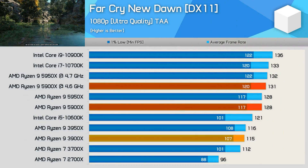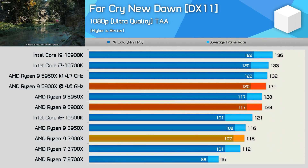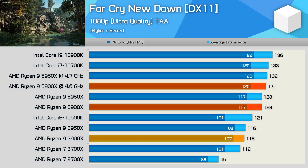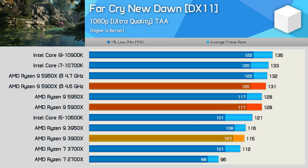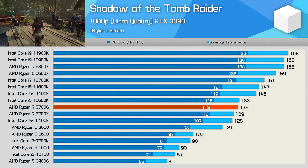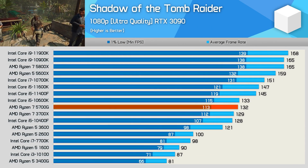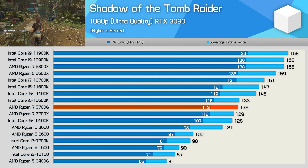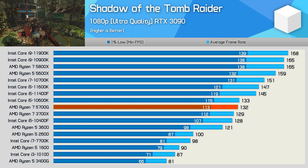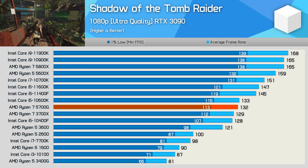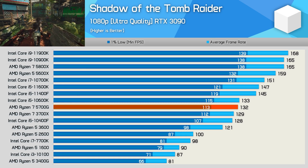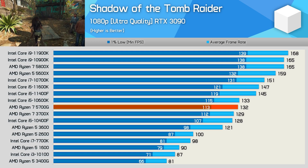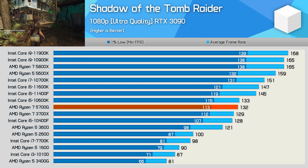If you look at our day-one reviews, we've got graphs that include the Core i5-7600K, and the frame time consistency for games like Shadow of the Tomb Raider is horrific. The 1% lows are like half that of a part like the 5600X, probably even lower. So you can clearly see where those frame time inconsistencies are within our graphs.